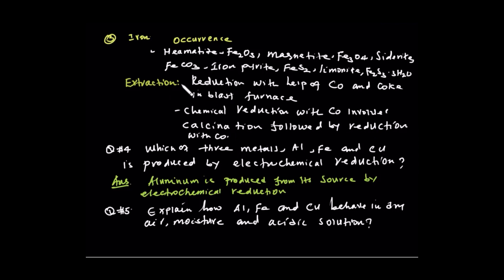The chemical reduction uses carbon monoxide, followed by reduction with carbon monoxide. The extracts of iron are obtained. Question number four: three metals — iron, copper, and aluminium — are produced by electrochemical reduction.